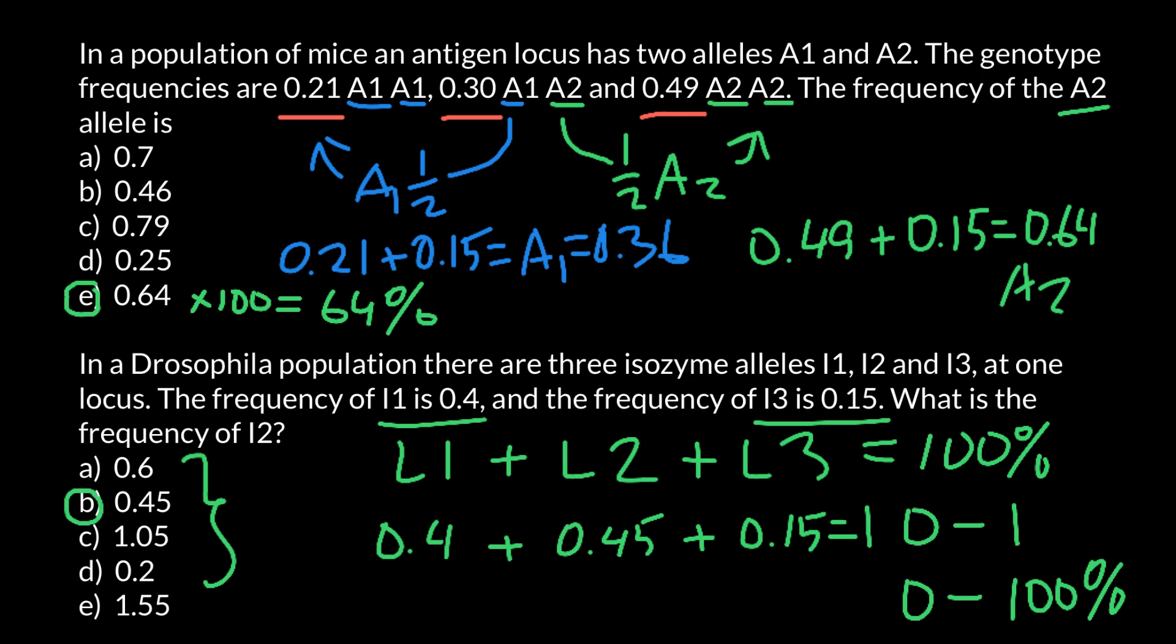So the frequency of all three alleles is going to equal 1, or 100% if we would do our calculations on the percentage scale. So we would have here 40%, 45%, and 15%, which equals 100%. So 0.45 here equals a frequency of 45%.